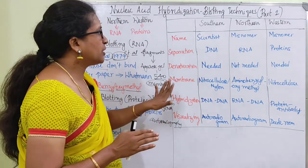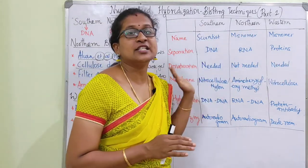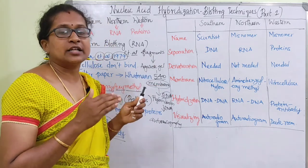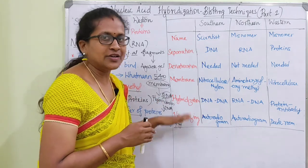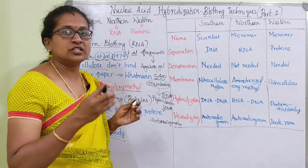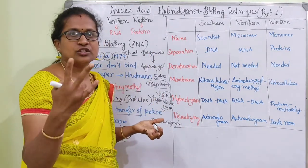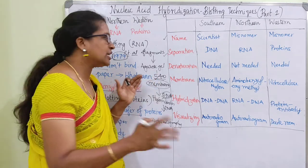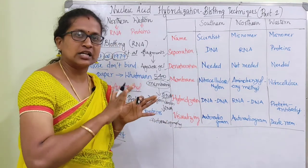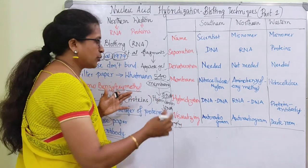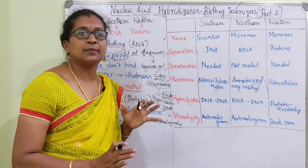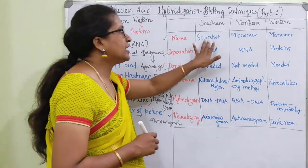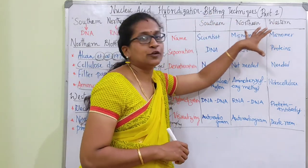Now let's compare southern, western, and northern blotting using six parameters: name, separation, denaturation, membrane, hybridization, and visualization. The name is based on the scientist's name for southern blotting, while northern and western are misnomers. The first parameter of separation refers to what molecule each technique targets.